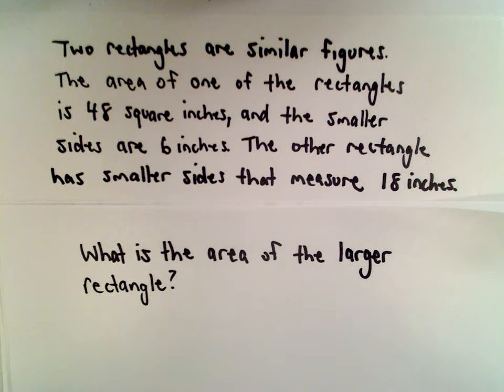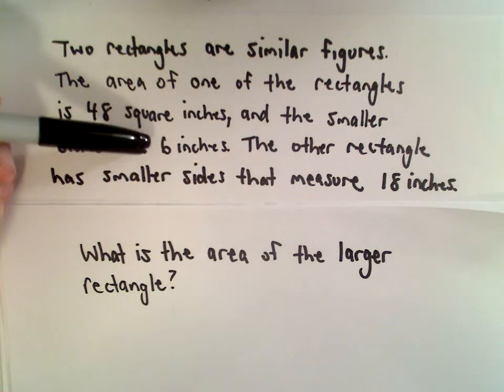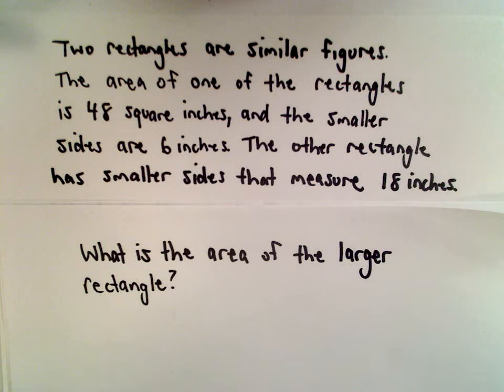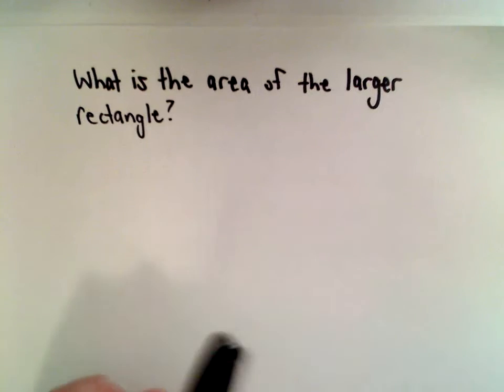Suppose we have two rectangles that we know are similar figures, and the area of one of the rectangles is 48 square inches, and its smaller sides are 6 inches long, and the other rectangle has smaller sides that measure 18 inches. We want to know what's the area of the larger rectangle.